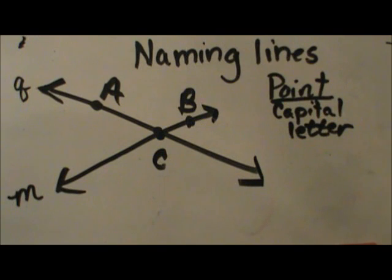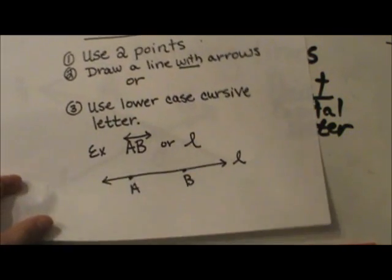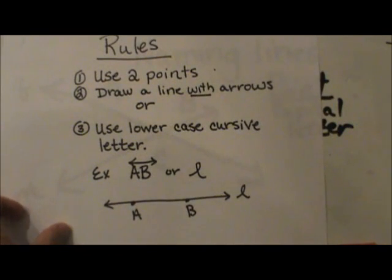Let's look at those rules and we'll look at exactly how to write that. The rules are you need to use two points on that line. It can be any two points. I only had two points on my line, but any two points on that line designate that line as that specific line.